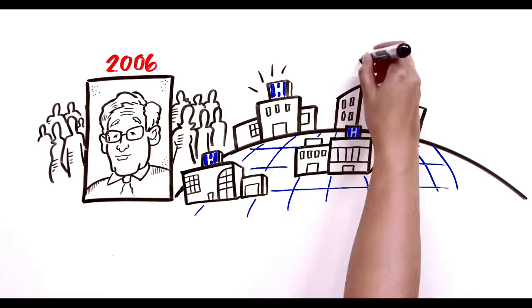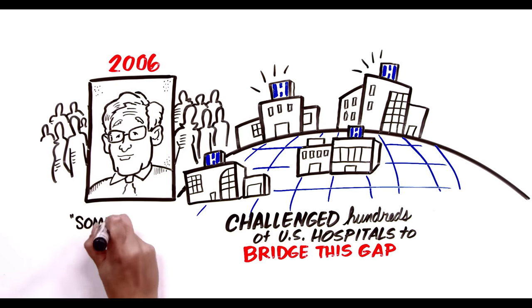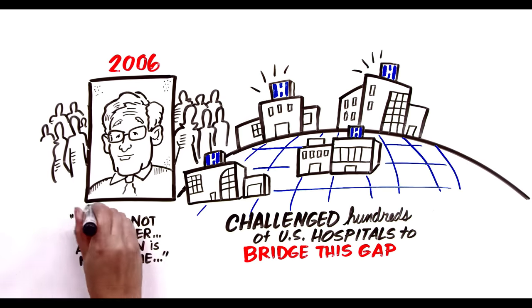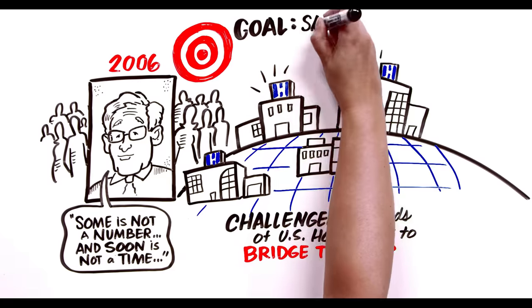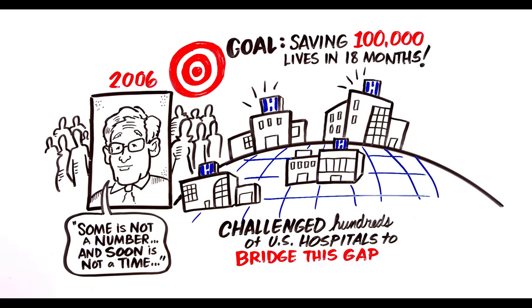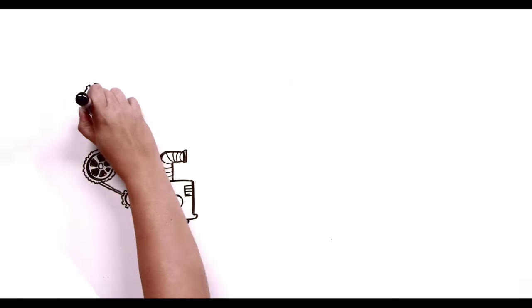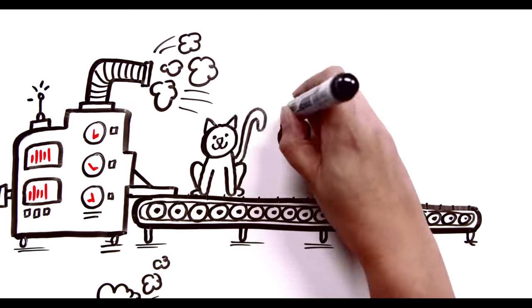In 2006, Berwick and his colleagues challenged hundreds of U.S. hospitals to bridge this gap, and felt strongly that some is not a number and soon is not a time. And so they set the goal of saving 100,000 lives in 18 months. They started with this simple notion: every system is perfectly designed to get the results it gets.